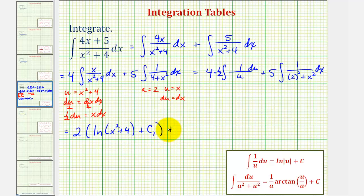And then we have plus five times one over a, which would be one over two, or one half, arctangent of u divided by a, which is x divided by two, plus c, we'll call it plus c sub two.